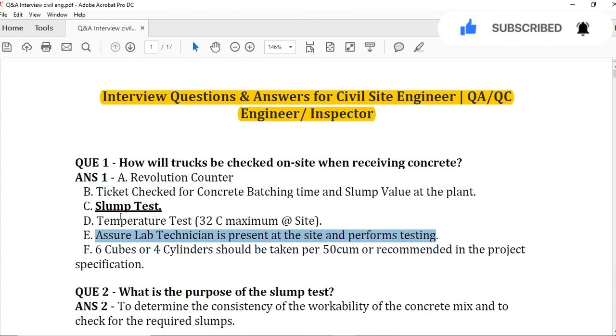The last thing should be checked is you have to take 6 cubes or 4 cylinders per 50 cubic meters, or as recommended in the project specification. But in our project specification, we have to take 6 cylinders. Two cylinders should be checked after 14 days and the four cylinders should be checked after 28 days. But it depends on the project specification and condition.